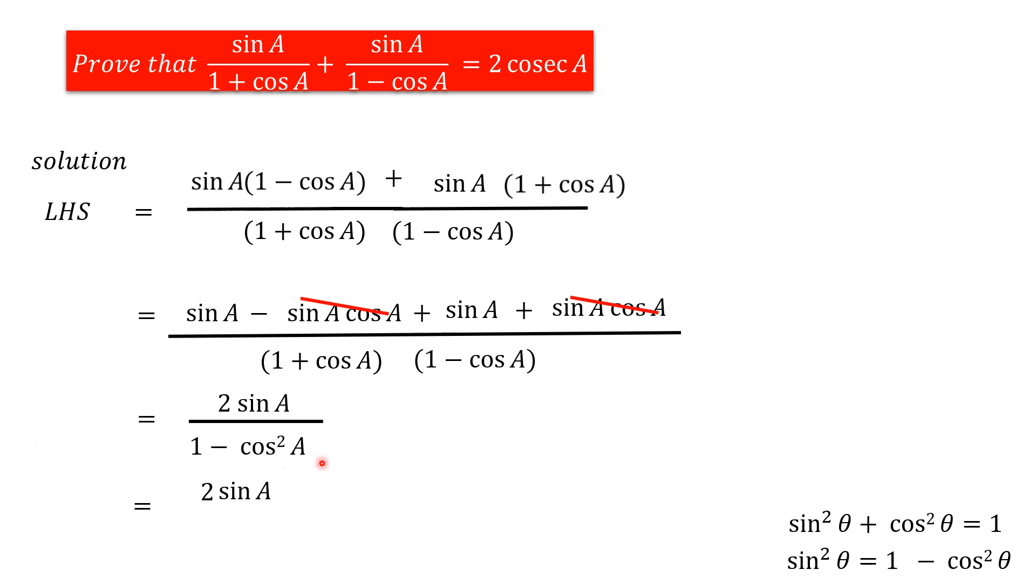So, instead of 1 minus cos square A, we can write it as sin square A. Next, the sin square A value can split up into sin A into sin A. Next, we can cancel out the sin A on the numerator and denominator. We get 2 by sin A.